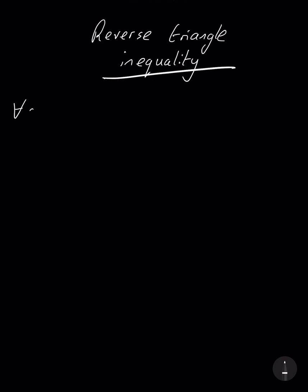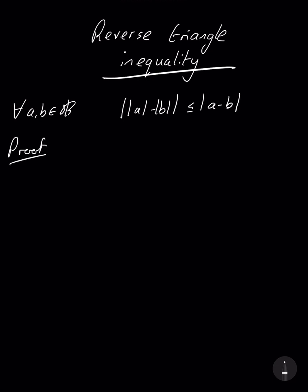It says that for all a and b real numbers, we have that the absolute value of the absolute value of a minus the absolute value of b is less than or equal to the absolute value of a minus b. So let's go ahead and prove this and we'll see that it follows from the normal triangle inequality.